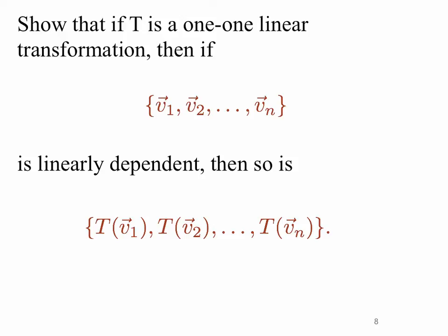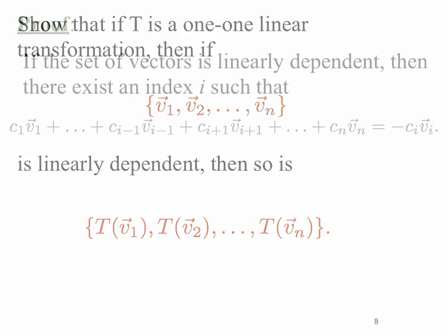So another example we could look at here is that we could show that if T is a one-to-one linear transformation, and then if V1 to VN are these vectors and they're linearly dependent, then so is a transformation of those linearly dependent vectors. So this is an interesting result because it says if the vectors that are in your domain are linearly dependent, then if you transform those vectors into the range, then the set of the transformed vectors are also linearly dependent.